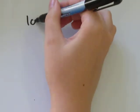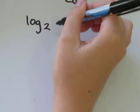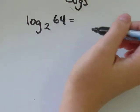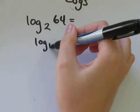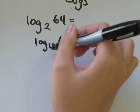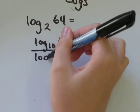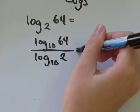What if it was log 2 of 64? Well, that would be log to the base of 10 of 64 over log to the base of 10 of 2.